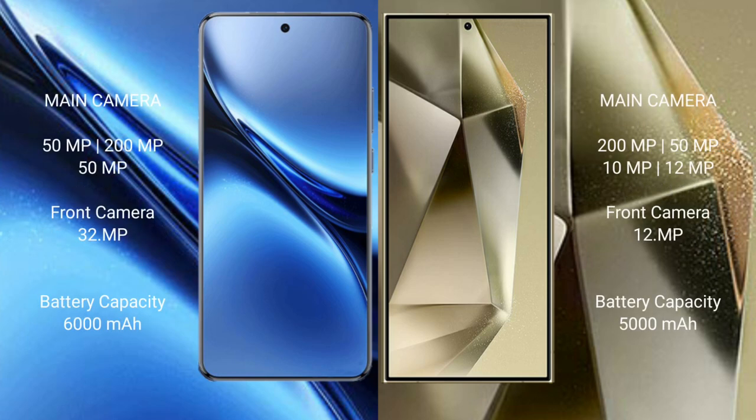Vivo X200 Pro features a rear triple camera setup: 50MP plus 200MP plus 50MP, and a 32MP front camera. Samsung Galaxy S24 Ultra features a rear quad camera setup: 200MP plus 50MP plus 10MP plus 12MP, and a 12MP front camera.